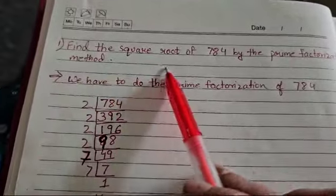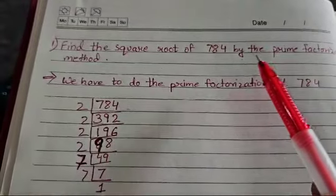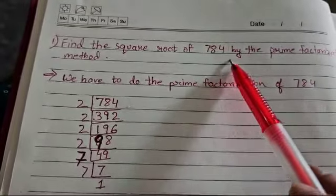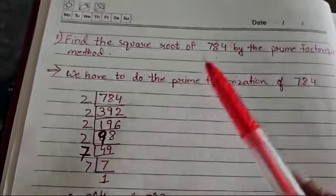The first sum is: find the square root of 784 by the prime factorization method. So you have to find out the square root of this number but using the prime factorization method. Now what is a prime factorization method?